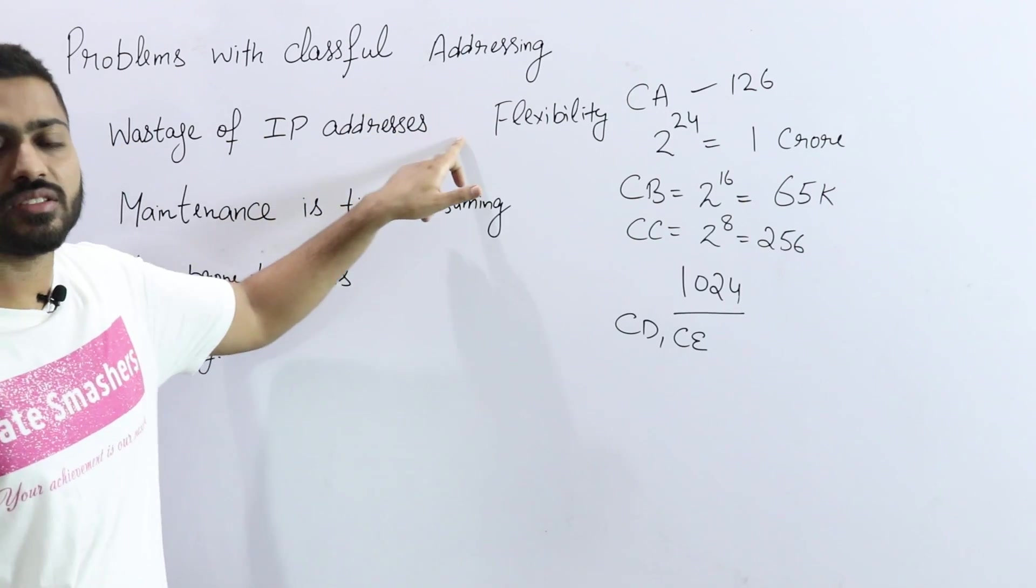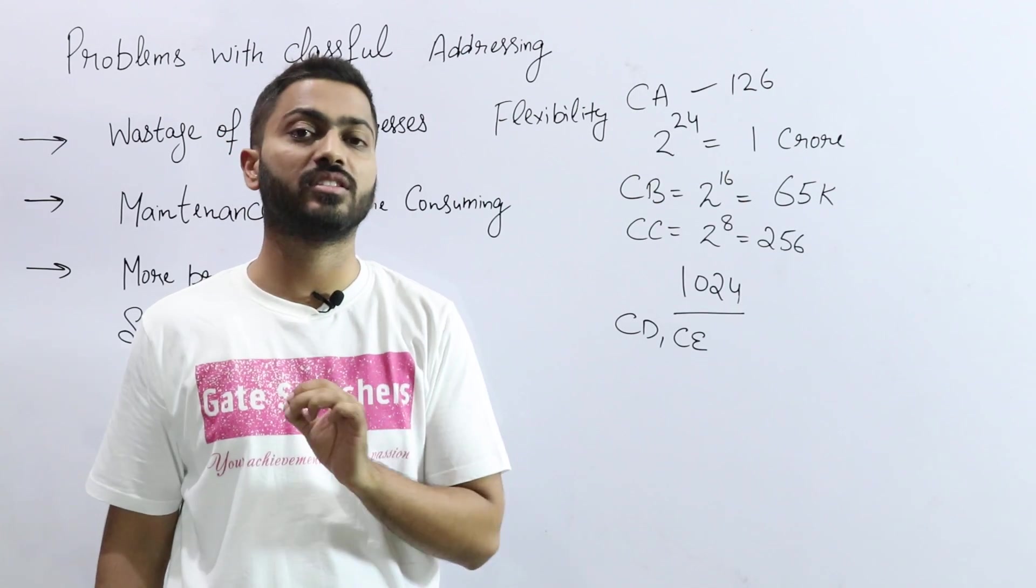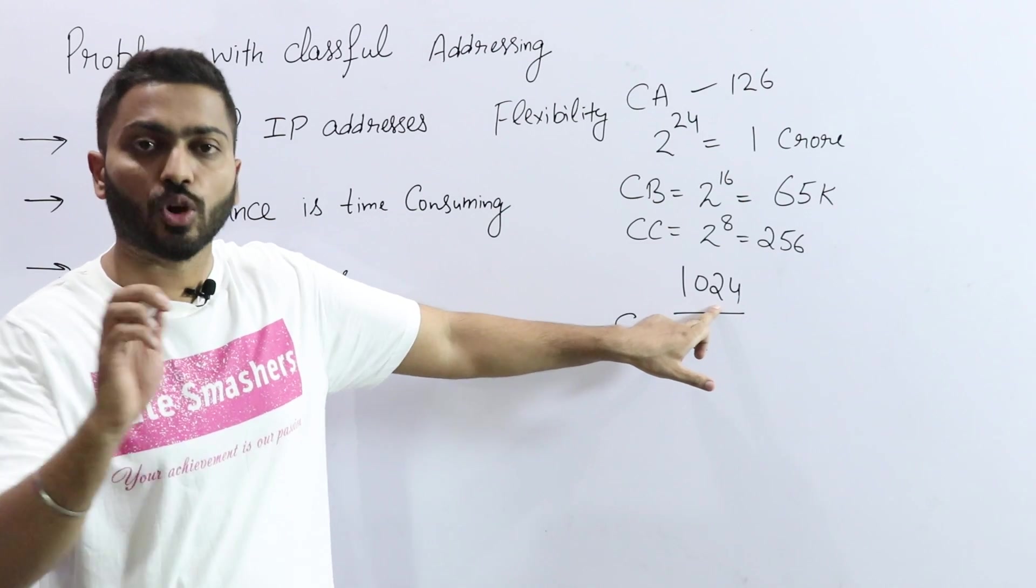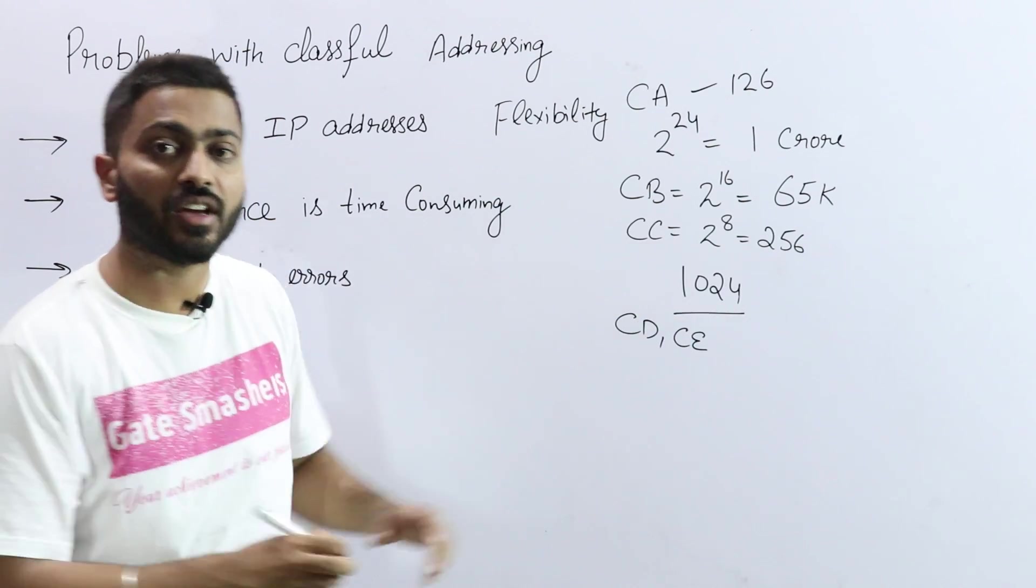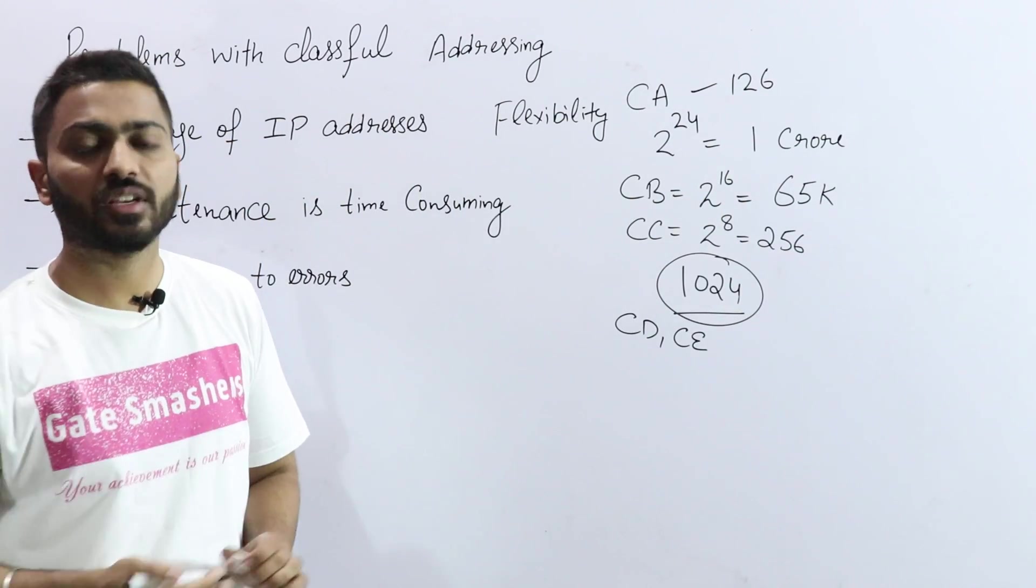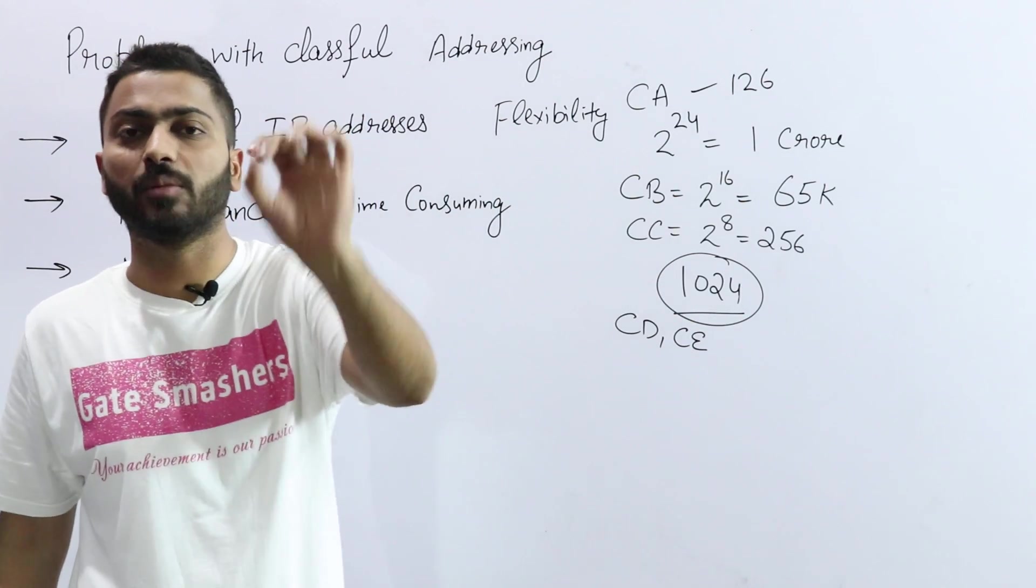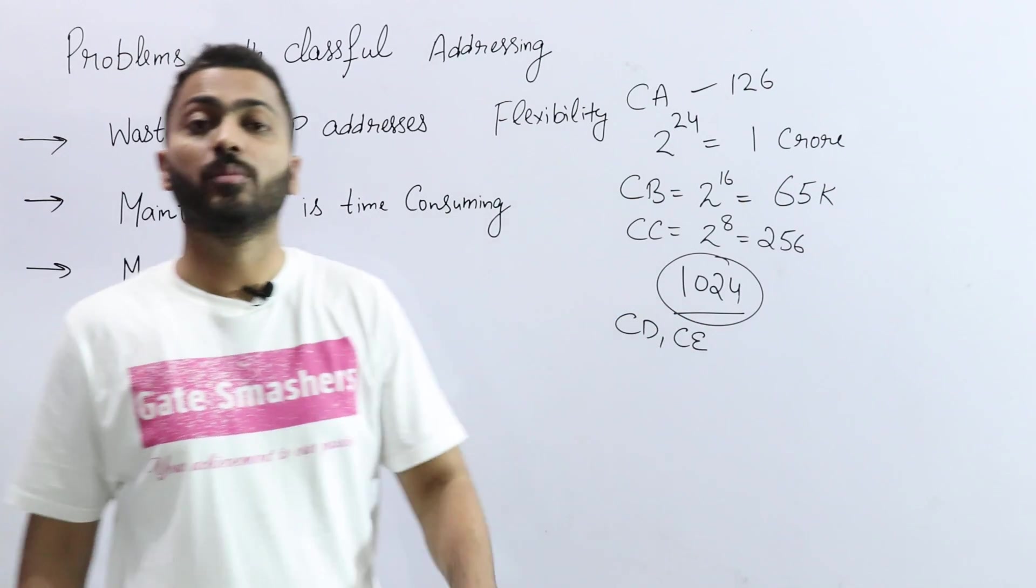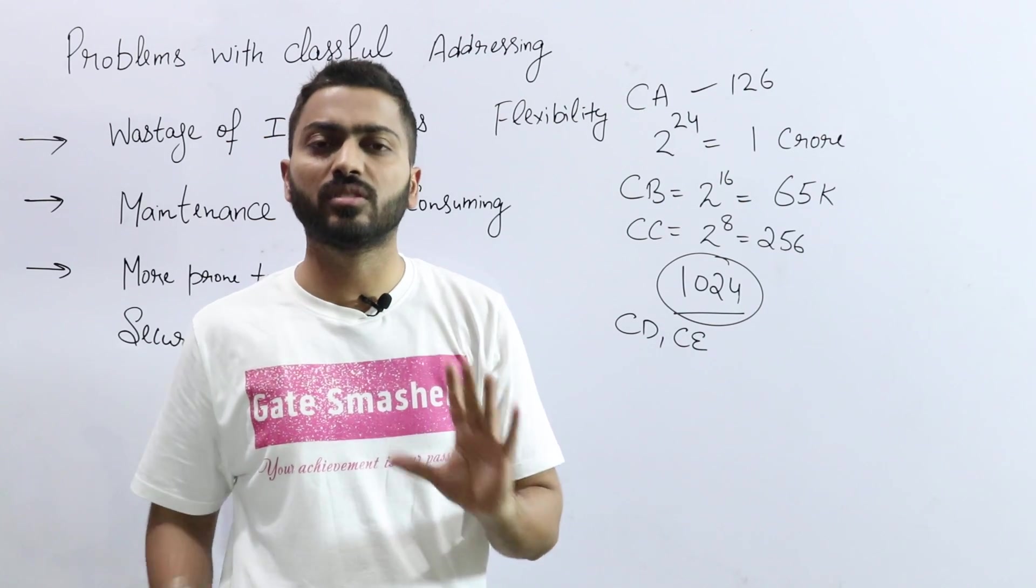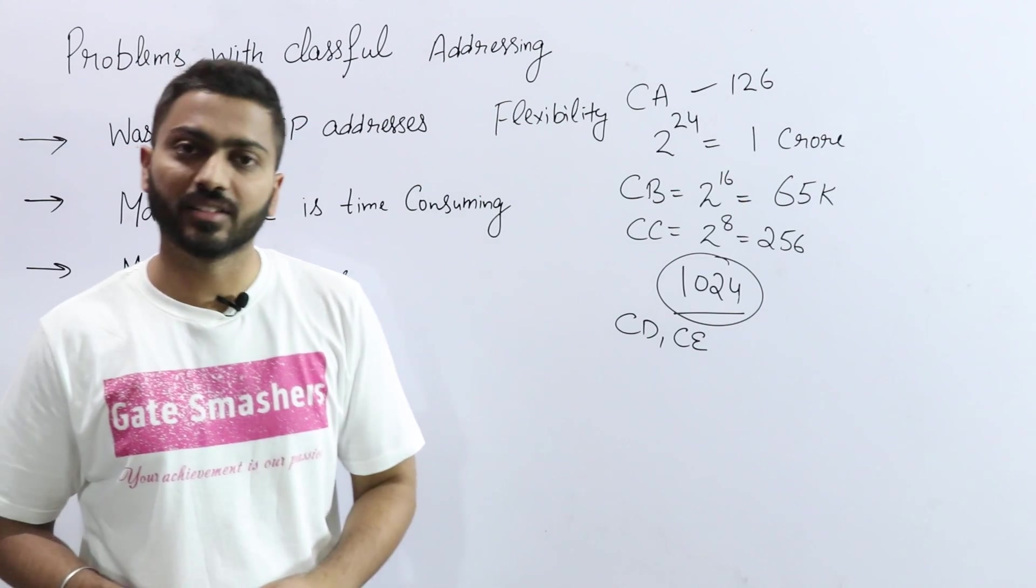And for wastage of IP addresses, I can use subnetting or classless addressing, which is the best point. If a user needs exactly 1024 IPs, then classless provides exactly 1024, not one more, not one less. That will exactly give the values whatever user demands. So you can use classless because that is a very flexible method of providing IP addresses. These are the major problems or drawbacks that occur in classful addressing. Thank you.